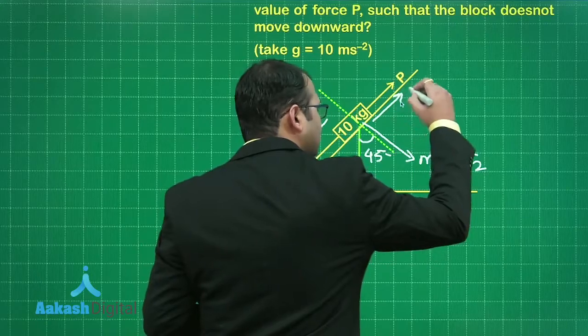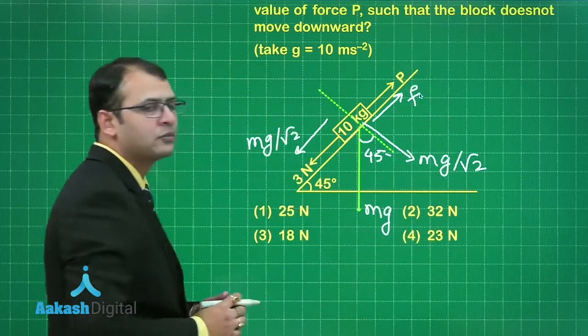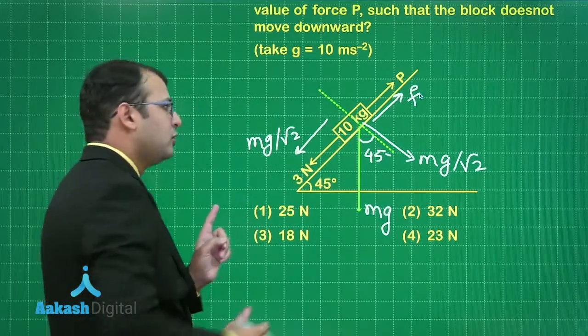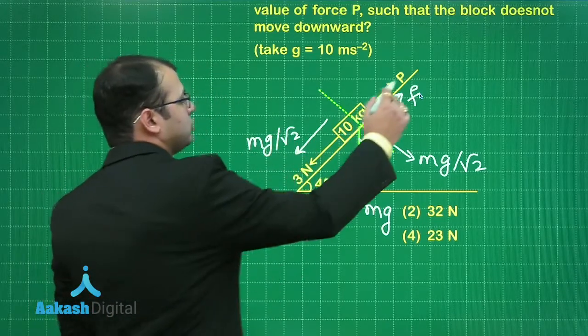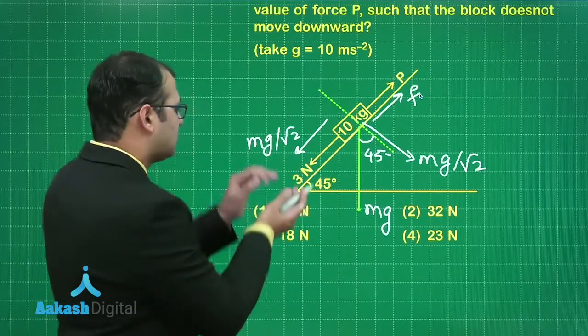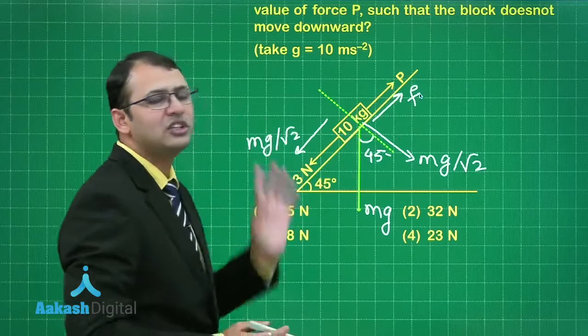The friction will have a tendency to act upwards. All in all along this direction the forces of downward nature and forces of this upward nature should add and balance each other. That means the sum of these two should be equal to sum of these two.